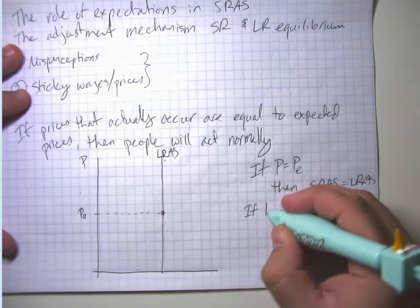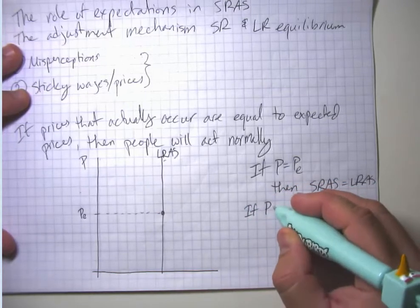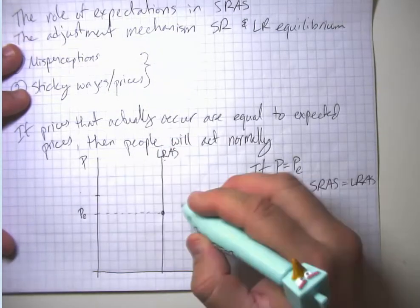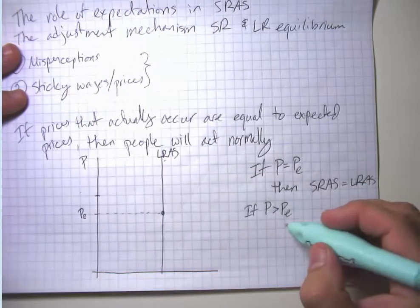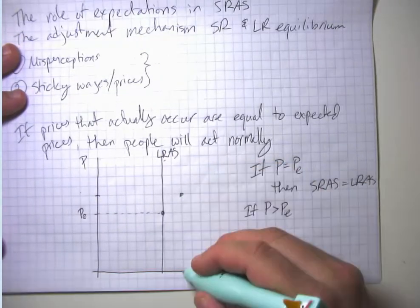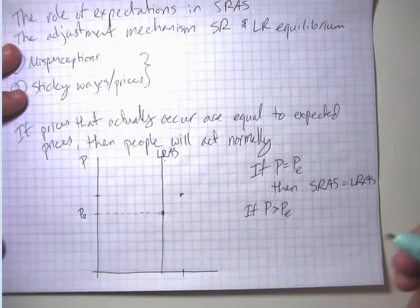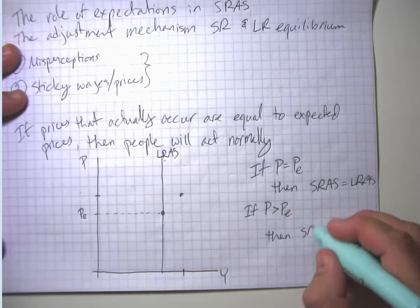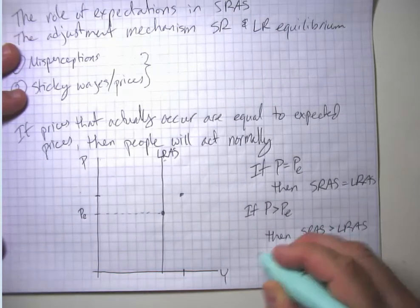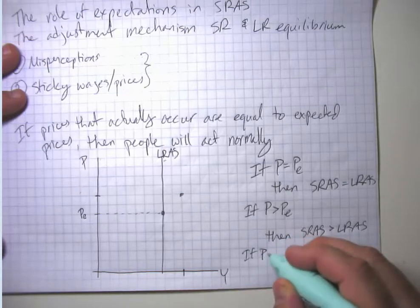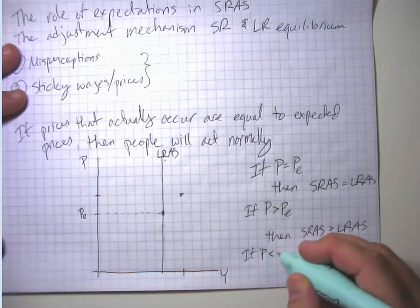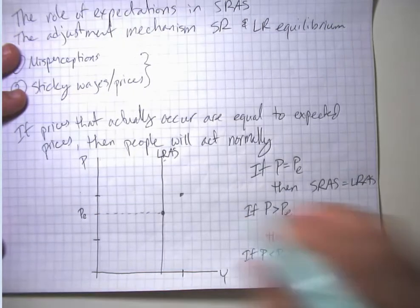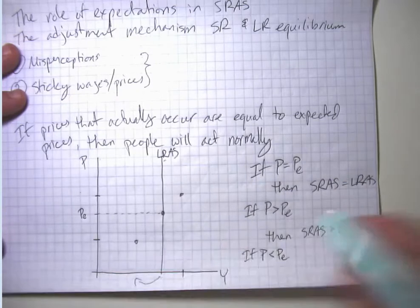If producers are surprised by unexpectedly high prices — if demand is stronger than they anticipated — then they will produce a higher than normal level of output. On the other hand, if they're disappointed or have a downside negative surprise, if the price level is lower than they were expecting, then they're going to produce less than normal.